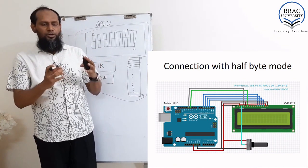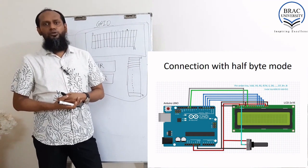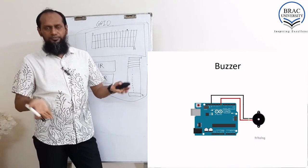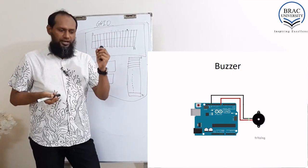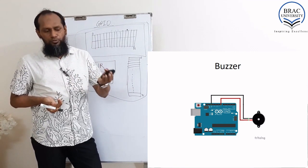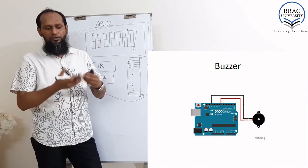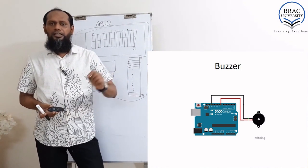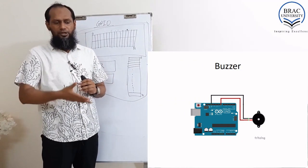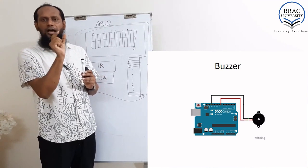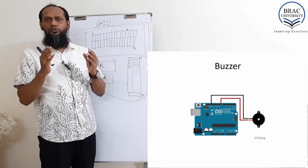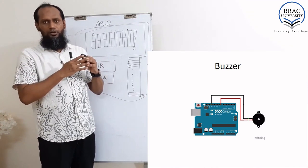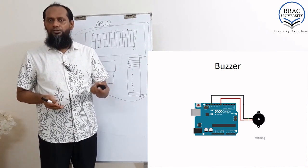That is the pin configuration. By using this configuration, we can use an LCD display with our microcontroller unit or Arduino. Now, the buzzer. Simply, if we give VCC and connect to ground with minus polarity, it will give you a beep. One connection is common ground and one is data. When we give a 1 on the data pin, the buzzer sounds. You give a delay to control how long the sound lasts — if you want one second, give 1000 milliseconds as a delay.